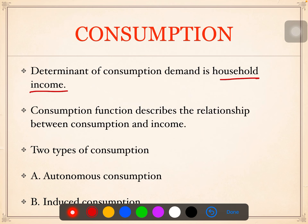Whatever goods and services you're going to consume — that means purchase — is dependent on income. Why do few people purchase all goods and services? Because they have good income. Few people are not able to purchase even basic needs because their income is less. So consumption is majorly and very importantly dependent on income.